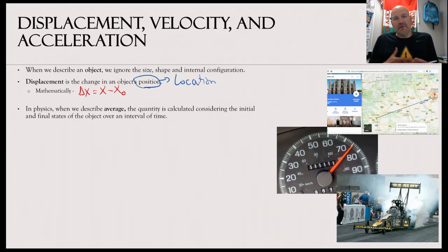Now, something that we're going to talk about and distinguish a lot in physics is the word average. Average is not your mathematical average. That's one thing to get out of your minds. Average is essentially calculated between the initial and the final states of an object over an interval of time. Another way we talk about it is rate. We're talking about that in terms of average.